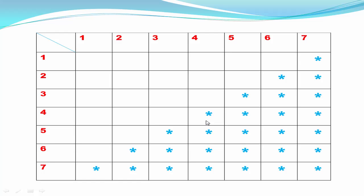To print the rows we need a loop, and we can write it as: for row equal to 1, row less than or equal to 7, then row plus plus. For this picture the maximum number of rows is 7, that's why we write the condition row less than or equal to 7.